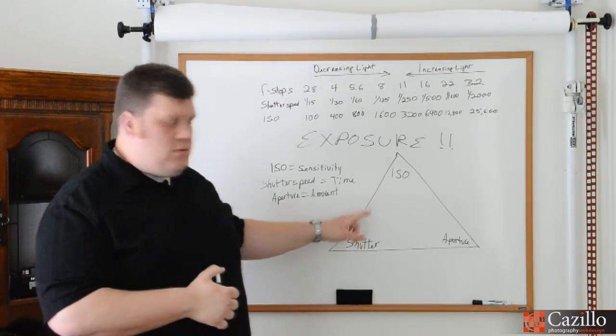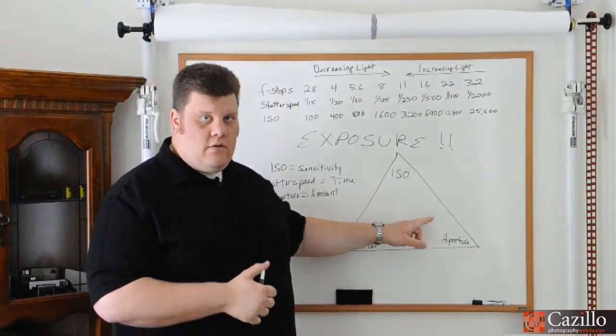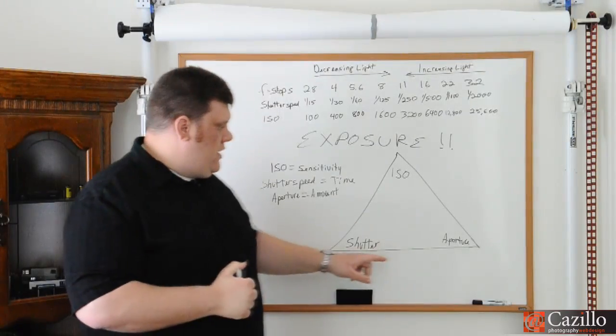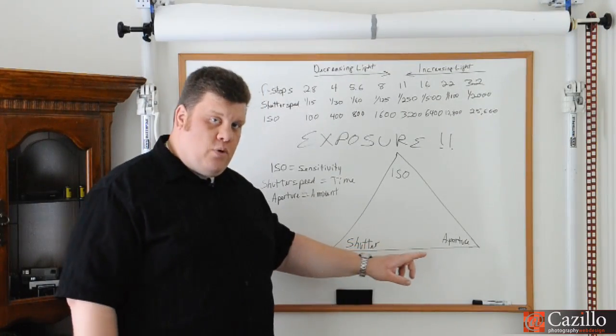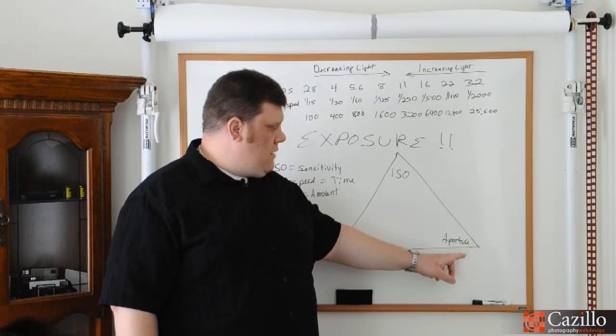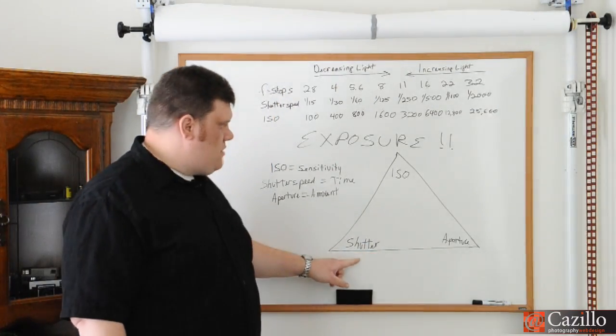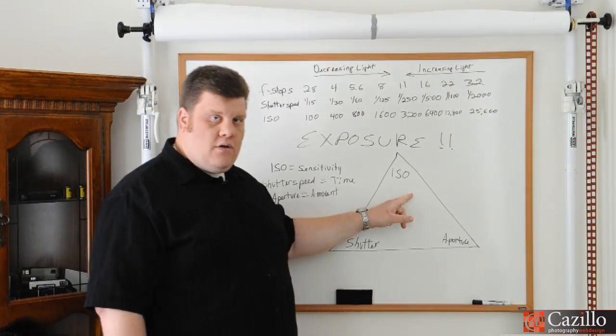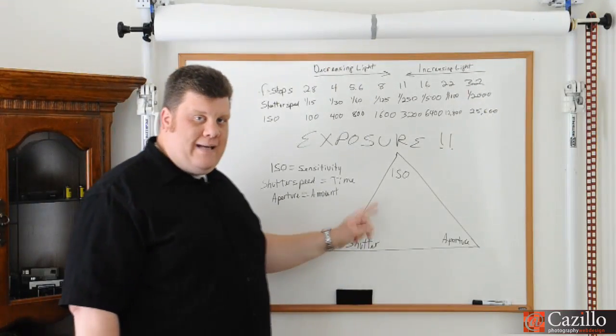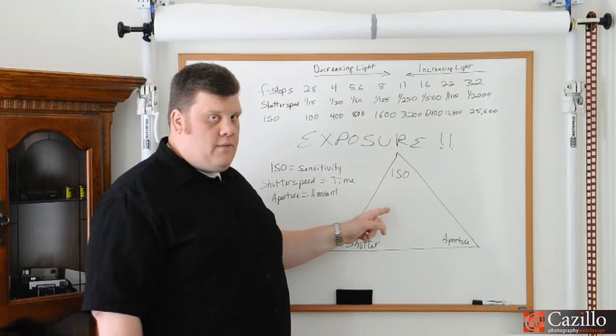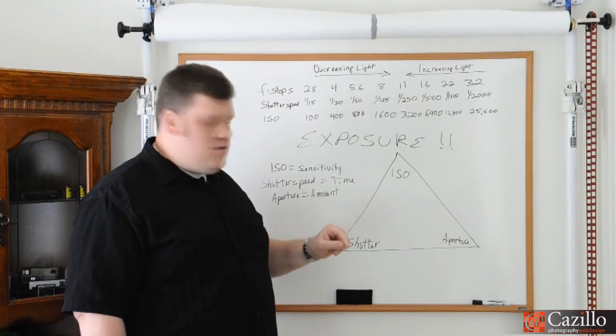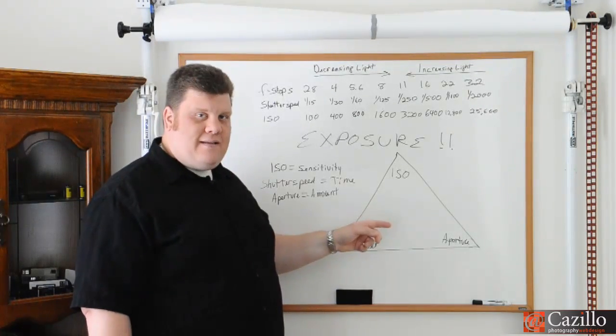One is always going to affect the other. So in other words, in order to get a proper exposure, but I want to say change my aperture to F4, alright, I'm going to need to either change my shutter speed or my ISO. So all three of them need to go together all the time. So that's the first part, and we'll get into the next right now.